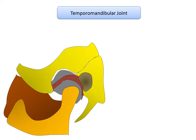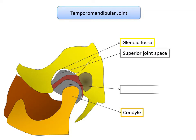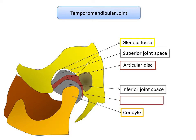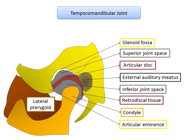The temporomandibular joint has a capsule and an articulating disc. The glenoid fossa, the temporal bone, and the condyle of the mandible form the articulating surfaces. The joint cavity is divided into upper and lower compartments by the articular disc. The terminal portion of the articular disc forms the retrodiscal tissue. The bounding structures are the articular eminence anteriorly and the external auditory meatus posteriorly. The lateral pterygoid is the major muscle attached to the condyle.